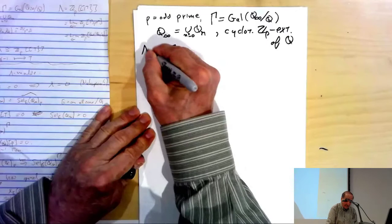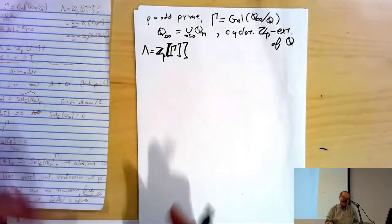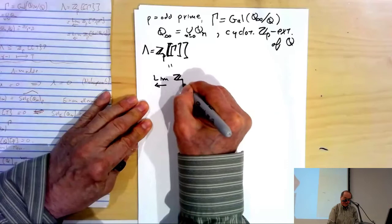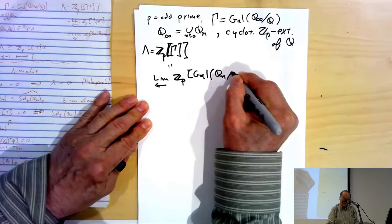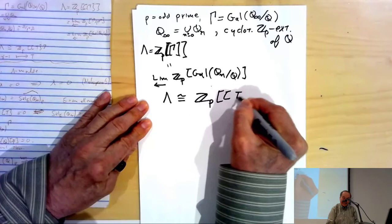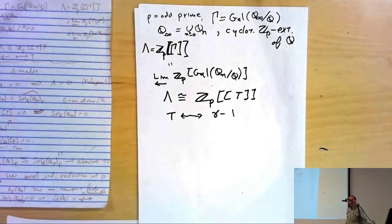Let's form a ring Λ = Z_p double-bracket Γ. I often like to think of it as an abstract object — it's the inverse limit of the finite group rings, the group rings for the finite Galois groups of Q_n over Q. But Λ is also isomorphic to a formal power series ring in a variable T, and one can think of T as corresponding to γ − 1, where γ is a topological generator for Γ.